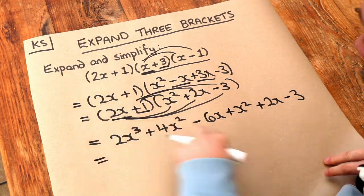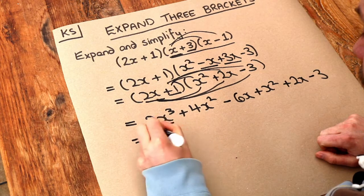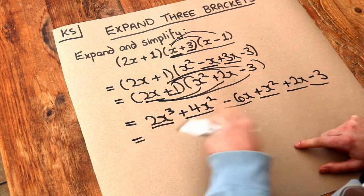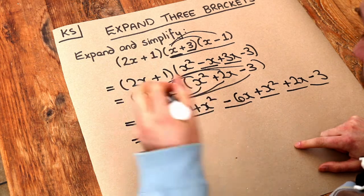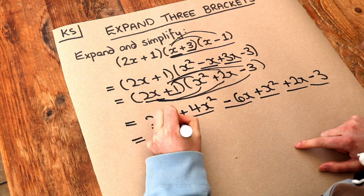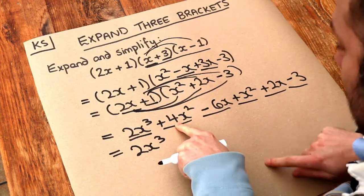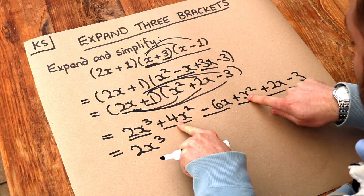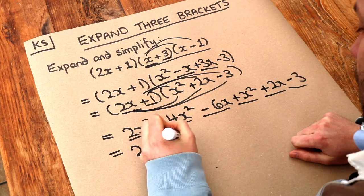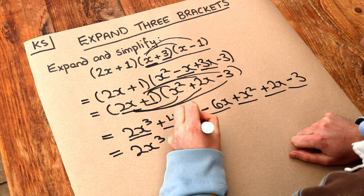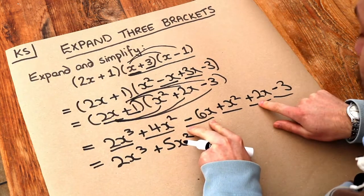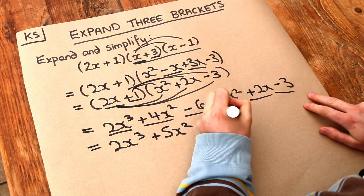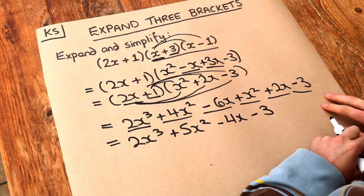And then we just collect like terms again — I'm just going to underline these for clarity. We've only got one x cubed term, so that stays as 2x cubed. We've got 4 lots of x squared plus 1 lot of x squared, which is 5x squared. We've got minus 6x plus 2x, which is minus 4x. And finally we've got that minus 3. And we are done.